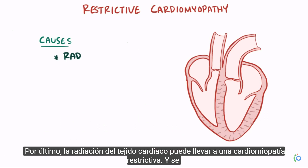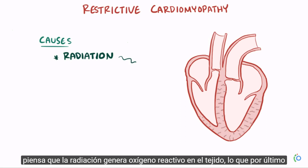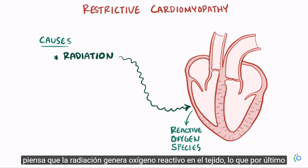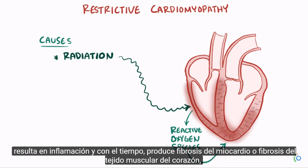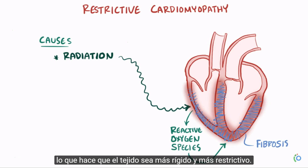Finally, radiation of the heart tissue can also lead to restrictive cardiomyopathy, and it's thought that this is because radiation generates reactive oxygen species in the tissue, which ultimately leads to inflammation over time, and causes myocardial fibrosis, or fibrosis to the heart muscle tissue, which makes the tissue stiffer and more restrictive.